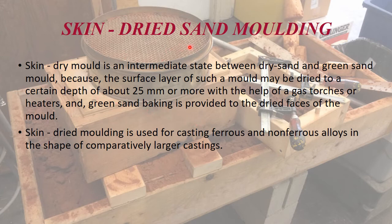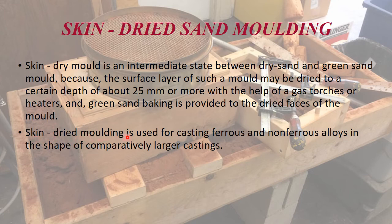Unlike dry molds, a skin dried mold is dried only to a depth of 6 mm to 25 mm. A skin dried mold possesses strength and other characteristics in between green and dry sand molds. If a skin dried mold is not poured immediately after drying, moisture from the green backing sand may penetrate the dried skin and make it ineffective. Skin dried molding is used for casting mostly ferrous and non-ferrous alloys in comparatively larger, heavier castings.